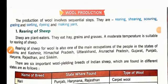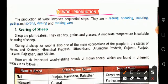Hello students, welcome back to your science online class. Today we will discuss the topic of wool production. The production of wool involves sequential steps: rearing, shearing, scouring, grading, sorting, dyeing, and making yarn.